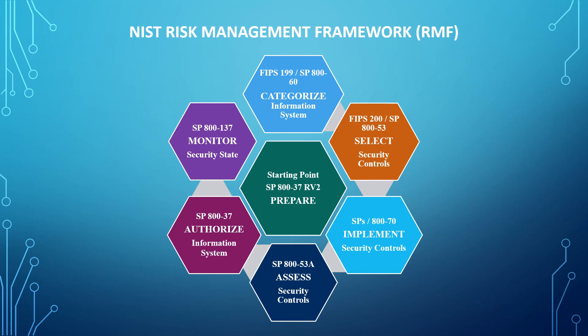In my previous videos, we've talked about the Prepare step of the NIST Risk Management Framework using NIST Special Publication 800-37 Rev 2. We've categorized the information system using FIPS 199 and NIST 800-60. We have selected the applicable security controls to provide safeguard to the information system using NIST 800-53. Those selected security controls have been implemented and the implementation statements have been documented in the system security plan. The security control assessor has conducted control assessments to determine if the selected controls are implemented correctly, if they are functioning as intended and if they are producing the desired outcome.